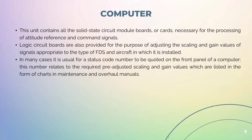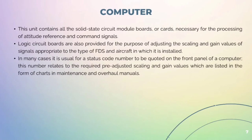Computer: This unit contains all the solid-state circuit module boards or cards necessary for the processing of attitude reference and command signals. Logic circuit boards are also provided for adjusting the scaling and gain values of the signals appropriate to the type of FDS and aircraft in which it is installed. In many cases, it is usual for the status code number to be quoted on the front panel of the computer. This number relates to the required pre-adjusted scaling and gain values which are listed in the form of charts in maintenance and overhaul manuals.